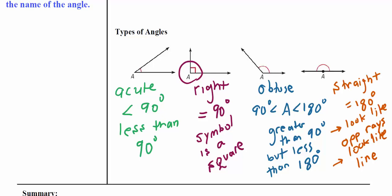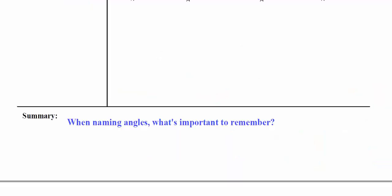And then we have our straight angle, which equals 180 degrees. It looks like opposite rays with the same vertex, and it also looks like a line. For your summary, when naming angles, what's important to remember? See you later.